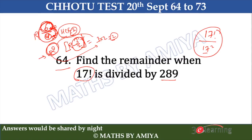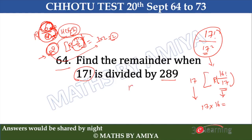Same applies here: we have 17 factorial and 17 squared. Take 17 out. You are left with 16 factorial divided by 17. By Wilson's theorem, the remainder of this is nothing but 16, and we multiply the HCF back out. So the answer is nothing but 17 into 16, which is 272.